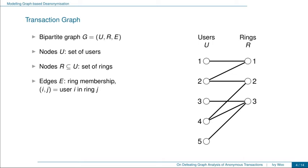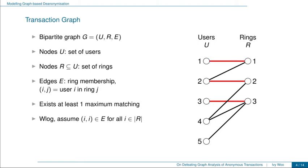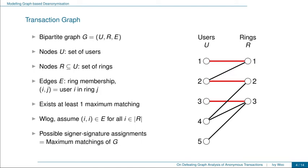On the right, I give an example transaction graph with five users and three rings. For example, the edges (1,1) and (2,1) mean that users 1 and 2 are members of ring 1. In a transaction graph, there must exist at least one maximum matching, and without loss of generality, we can assume that all edges (i,i) are in the graph. I have highlighted one maximum matching in red. A maximum matching has the semantic meaning that it represents a possible signer-signature assignment — for example, user 1 is the real signer of ring 1, user 2 is the real signer of ring 2, and so on.